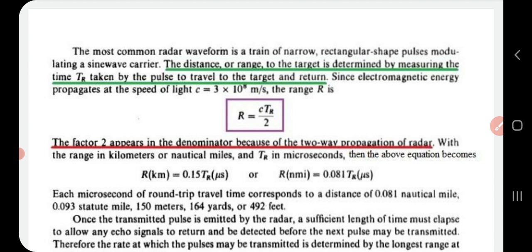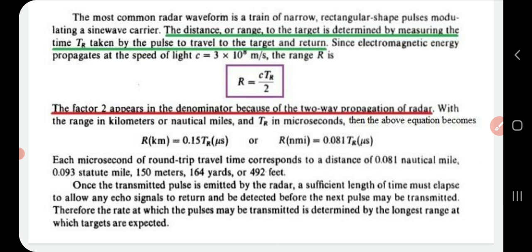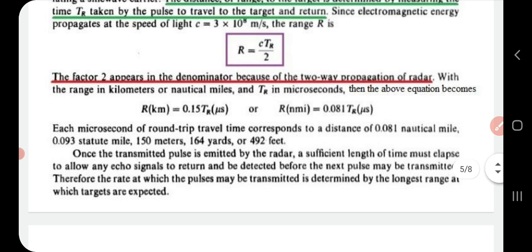In order to express this range in kilometers or nautical miles, if tr is expressed in microseconds, the range in kilometers is 0.15 × tr (microseconds), and if the range is expressed in nautical miles it is 0.081 × tr (microseconds).